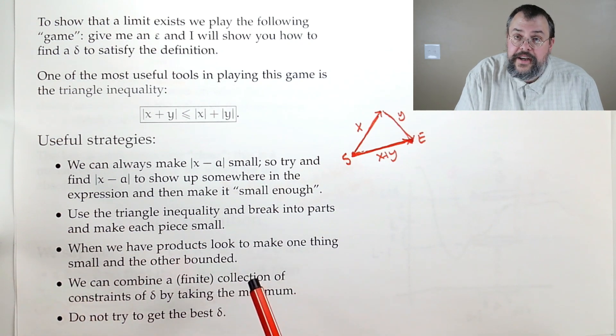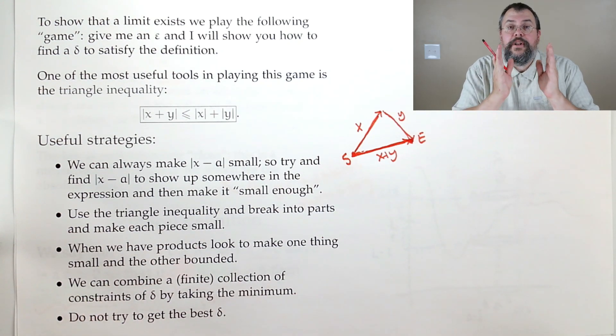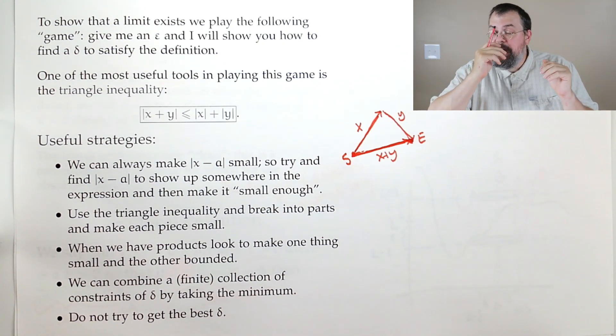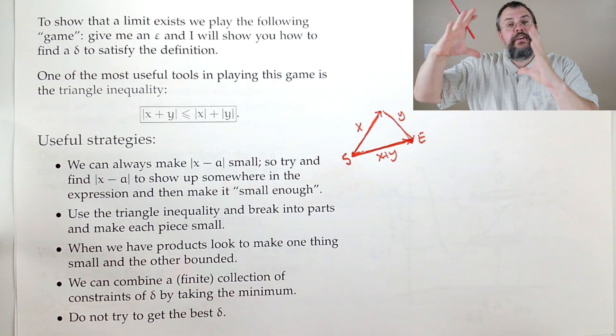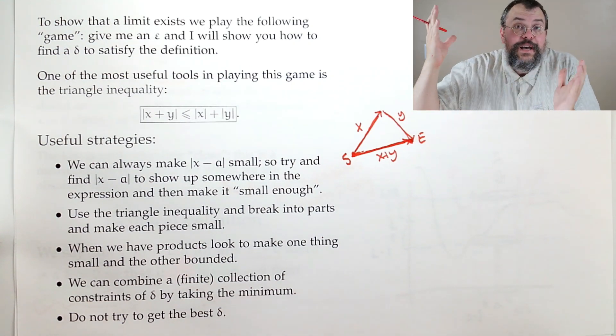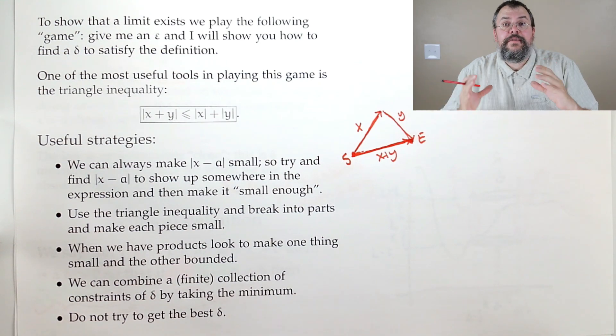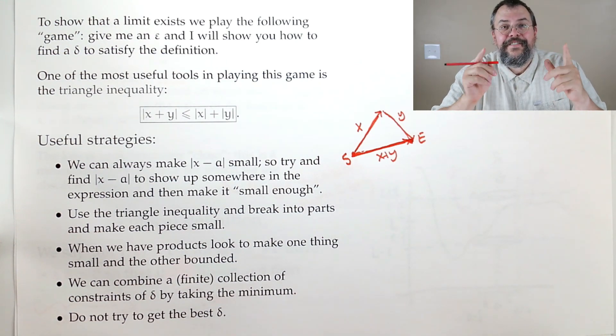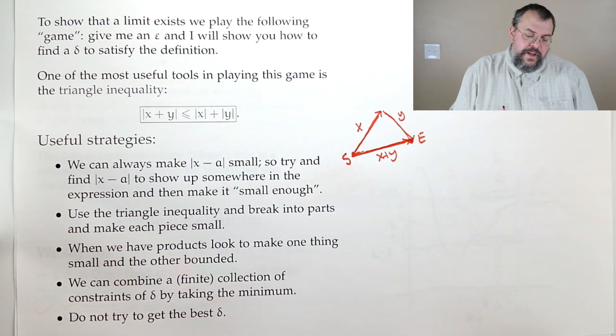When you have a product, look to make one thing very small. And the other part, meh, not big. In other words, bounded. So if you can say that this part, which is hard, I can say it's hard, but it can't be arbitrarily big. It's a bounded term. And this part I can make arbitrarily small. You win. Victory.